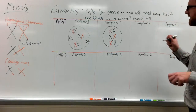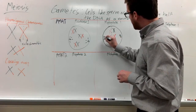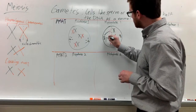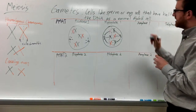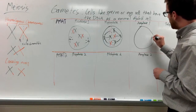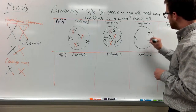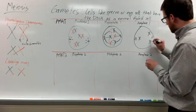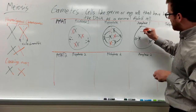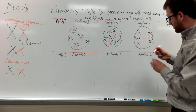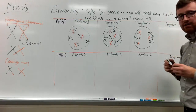In anaphase — 'anaphase' stands for away — the spindle fibers connect to the chromosomes and the centrioles are here. The chromosomes start being pulled to opposite sides of the cell. We draw the orange ones as well. In anaphase, the chromosomes are moving away from the middle.